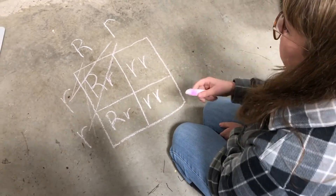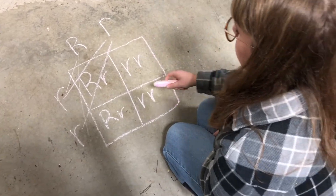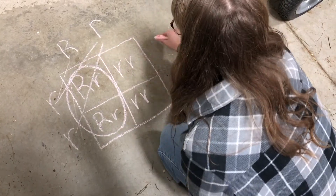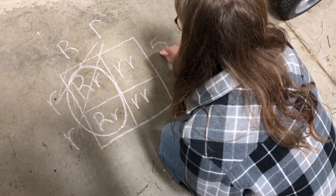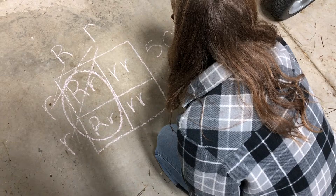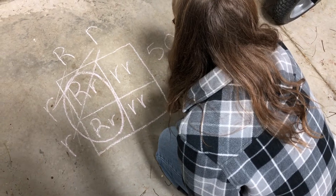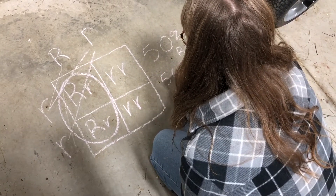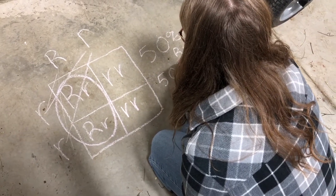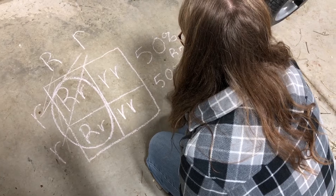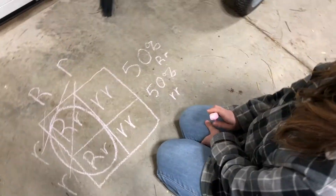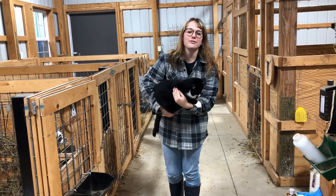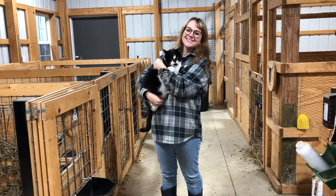So, according to this Punnett square, the baby has a 50% chance of having a black coat and a 50% chance of having a red coat. Big, small, short, or tall — phenotypes explain it all.